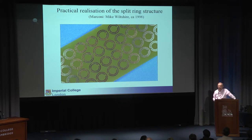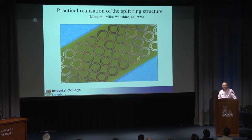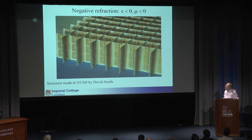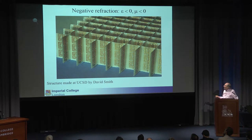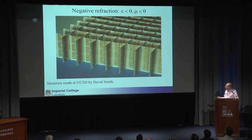The fact that you could take a ride on another technology meant that all you had to do was design the structure on your computer, post off the file to a manufacturer, and back through the post would come your metamaterial. This idea of magnetism without magnets was taken up at UCSD by David Smith, who became a very good friend and collaborator, and this was actually the first dramatic application of metamaterials.